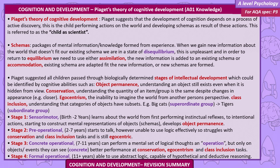Stage one: Sensorimotor, birth to two years. The child learns about the world from first performing instinctual reflexes to intentional actions, starting to construct mental representations of objects (schemas), and develops object permanence. Stage two: Pre-operational, two to seven years. Starts to talk, however unable to use logic effectively, so struggles with conservation and class inclusion tasks, and is still egocentric.